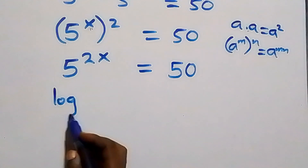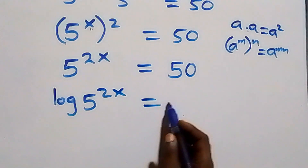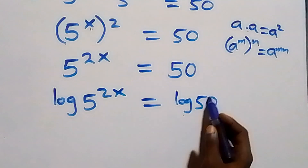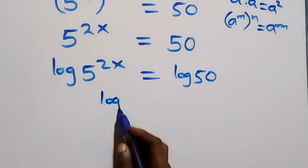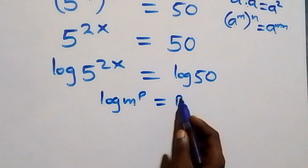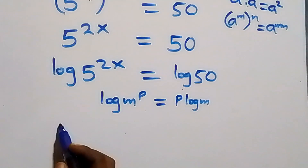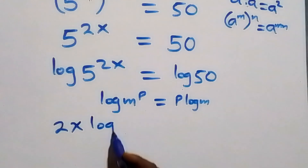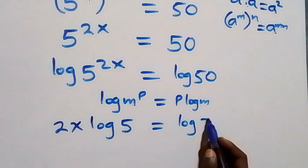From here we take the log on both sides, so we have log of 5 raised to power 2x equals to log 50. Applying the power rule of logarithms: log of m raised to power p is the same as p times log m. This becomes 2x times log 5 equals to log 50.